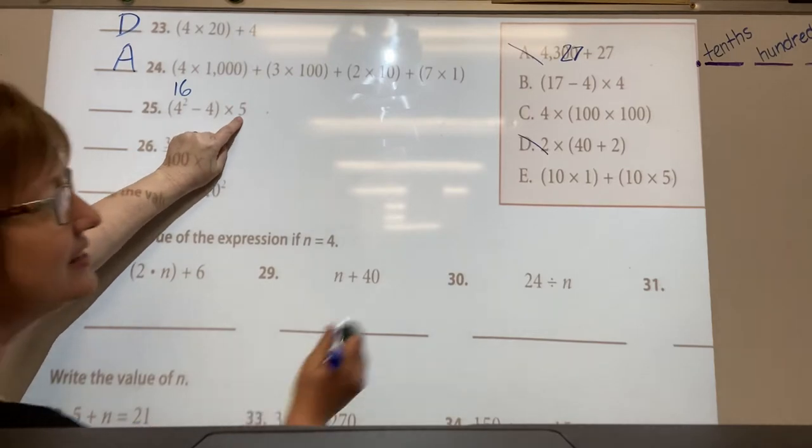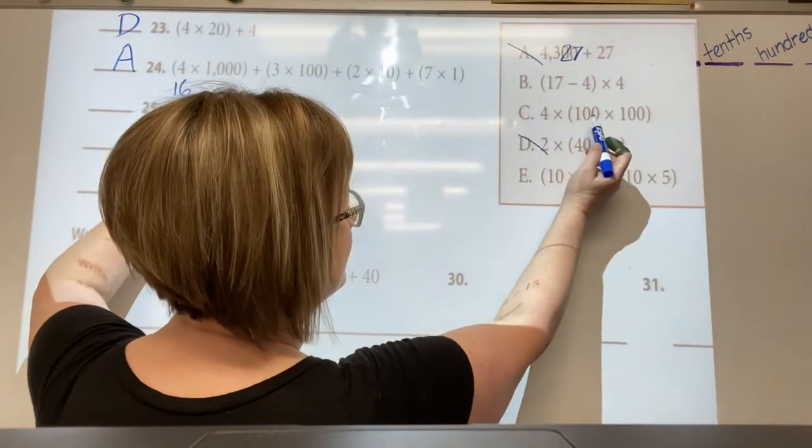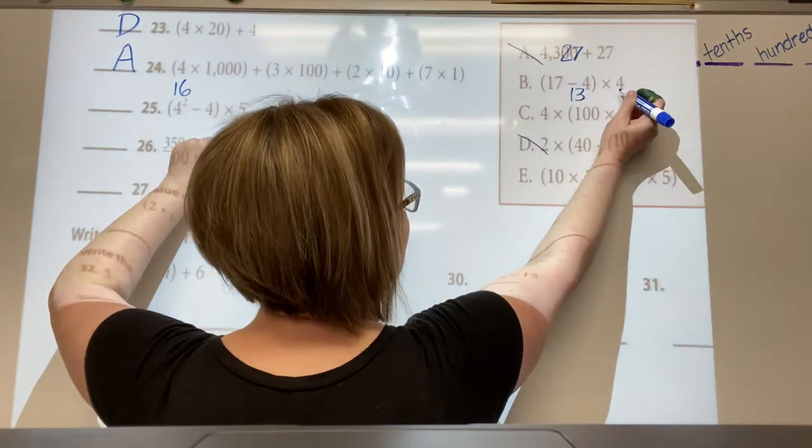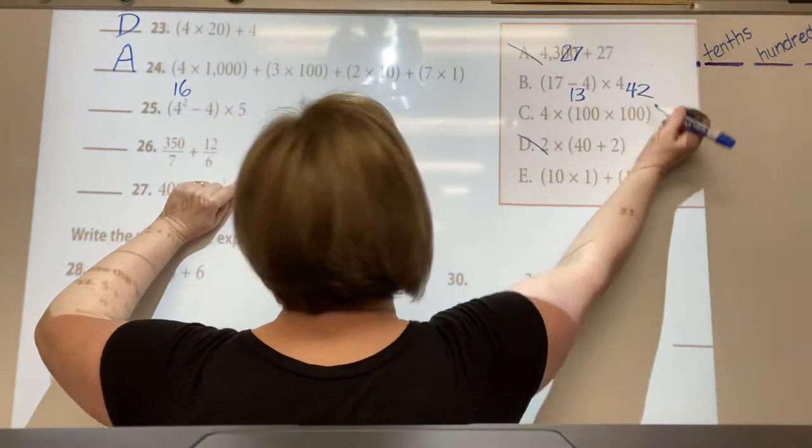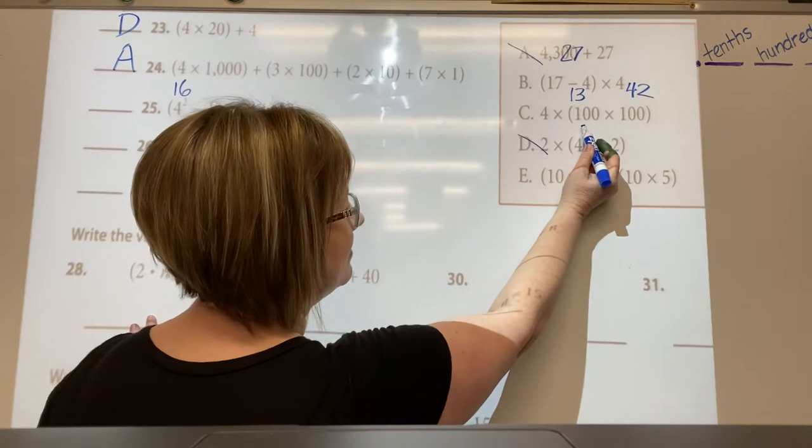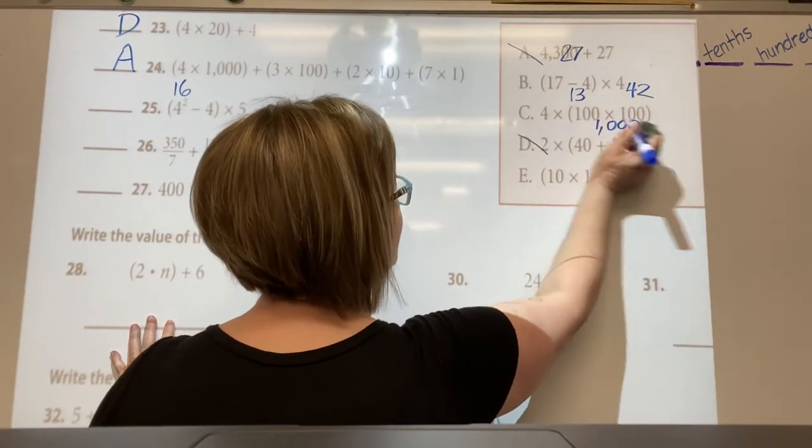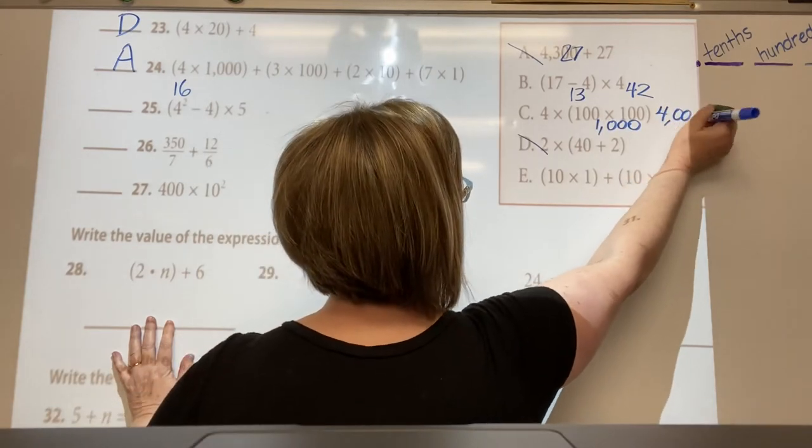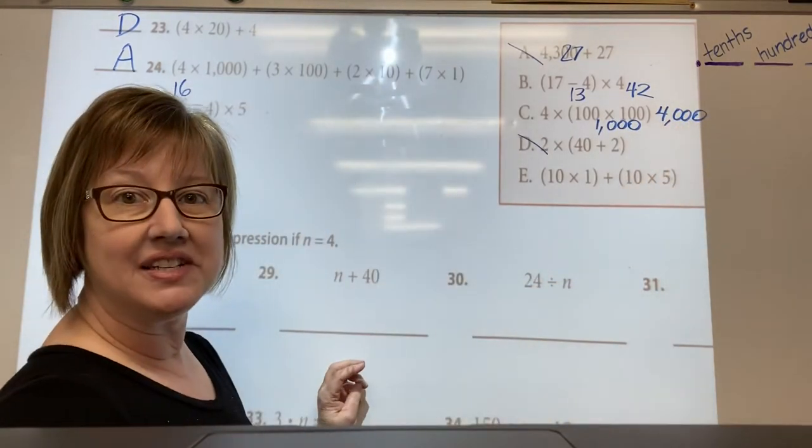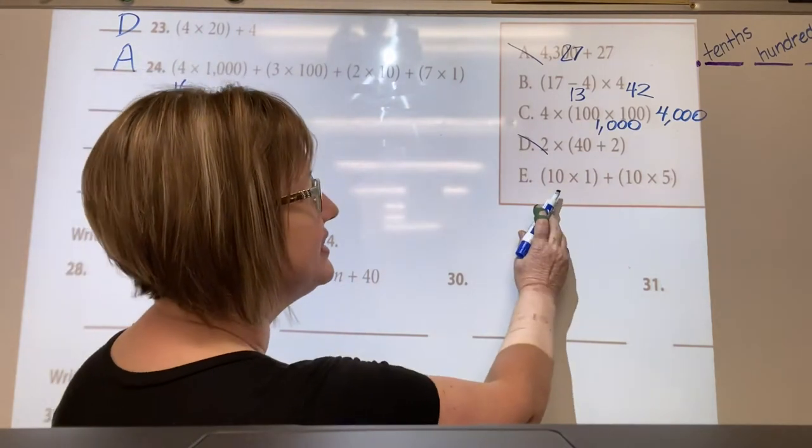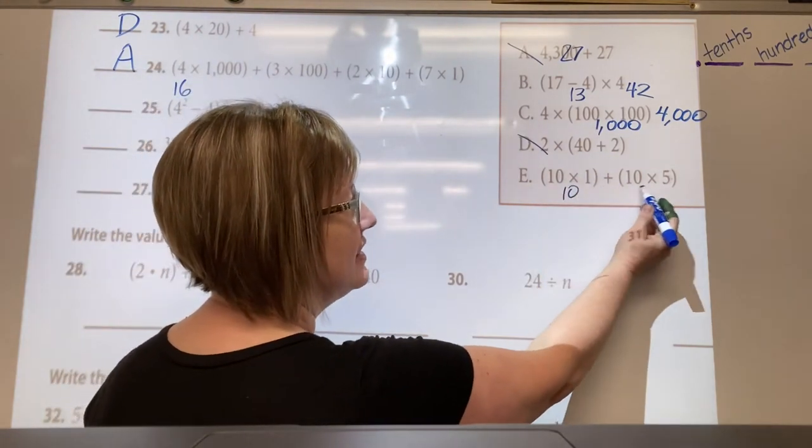Which one of these would also equal sixty? Seventeen minus four is thirteen times four, that's forty-two. Four times a hundred, or a hundred times a hundred is a thousand, four times that would be four thousand. You guys can figure these out. And that leaves this one: ten times one is ten, ten times five is fifty, so ten plus fifty is sixty.